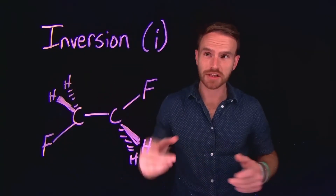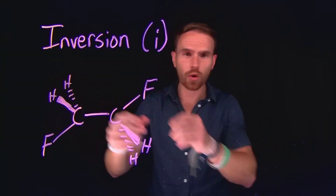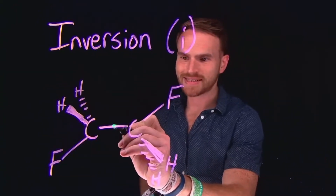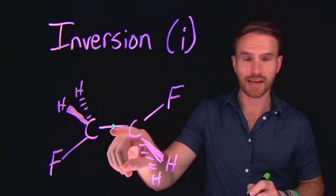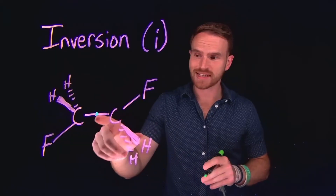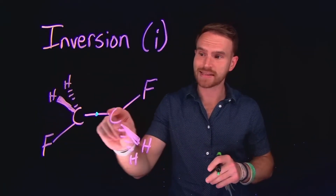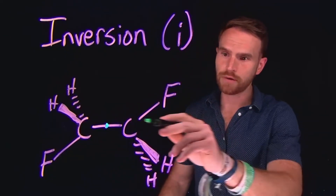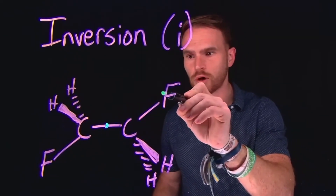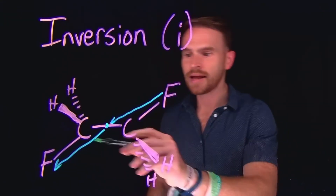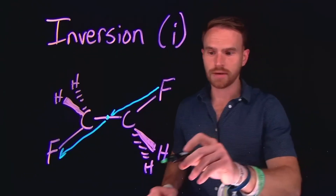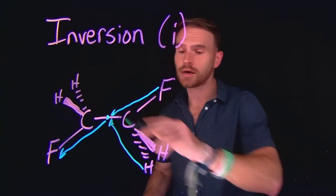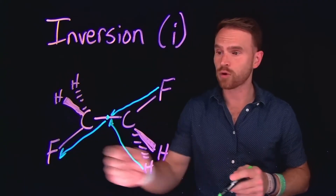The inversion operation, denoted by the symbol lowercase i, involves moving every single atom in a molecule through the center of the molecule and coming out the other side at the same angle and distance. The center point is known as the center of inversion. Importantly, the center of inversion does not have to exist at the center of an atom, just at the complete center of the molecule. For this molecule, both fluorine atoms on the plane of the screen pass through the center and exchange places, and each hydrogen atom also passes through the center — the molecule looks the exact same, so it has a center of inversion.